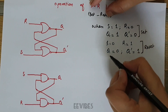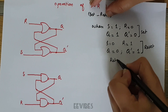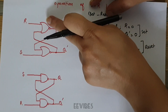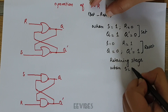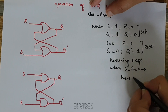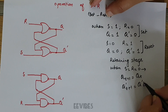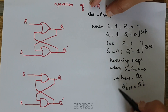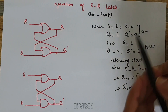The first stage is the set stage, the second is the reset stage, and there is a third stage defined for the SR latch usually called the retaining state. For the SR latch designed using the NOR gate, this retaining stage occurs when both S and R are equal to 0. The latch retains its previous value, so Q(t+1) equals Q(t), and Q-bar(t+1) equals Q-bar(t) — whatever the output was previously will be retained.